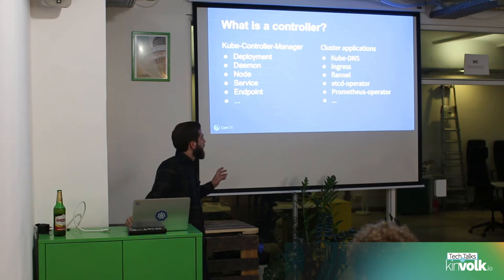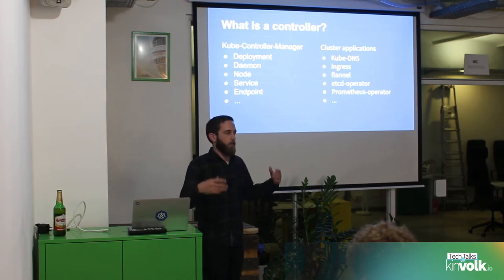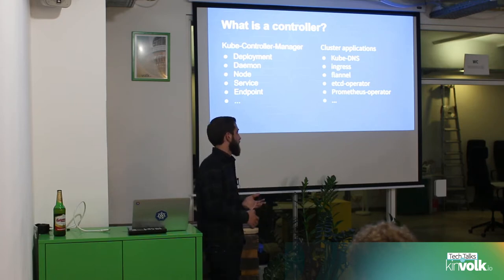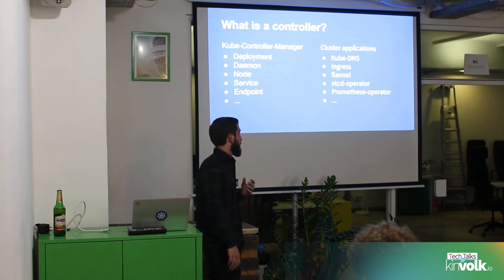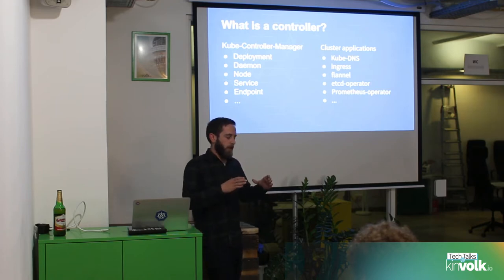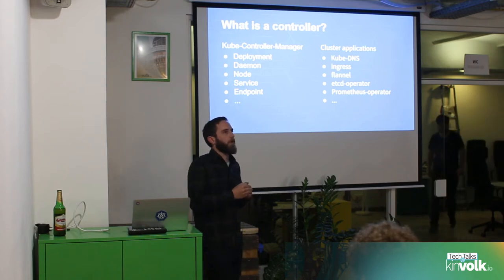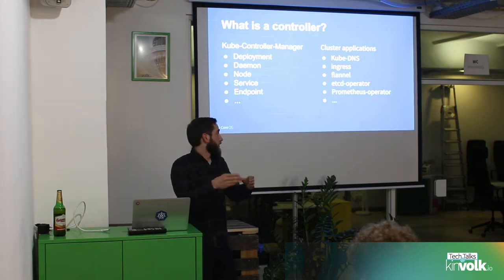Outside of core Kubernetes components, applications within the cluster also follow the same pattern. Things like kube-DNS — watching services and pods, and as those change, updating DNS entries so you can reference pods or services. Things like the ingress controller, or flannel, watching what network addresses are assigned to nodes and applying those to the cluster. Similarly, Calico would do the same. Or things like the etcd operator and Prometheus operator — these take concepts not native to Kubernetes. With the etcd operator, you can say I want to spin up three new etcd clusters, give it an object, and it treats that as desired state and makes it true in your cluster — all following the same sync loop.